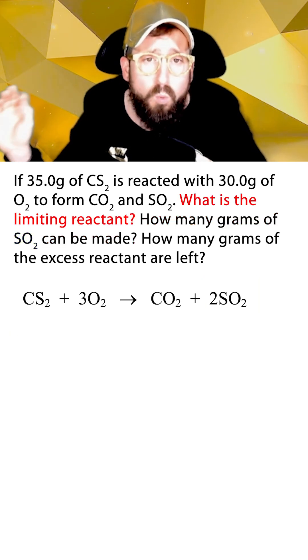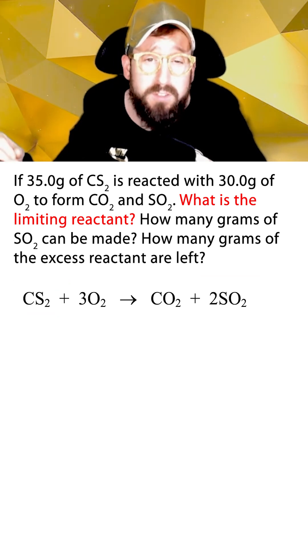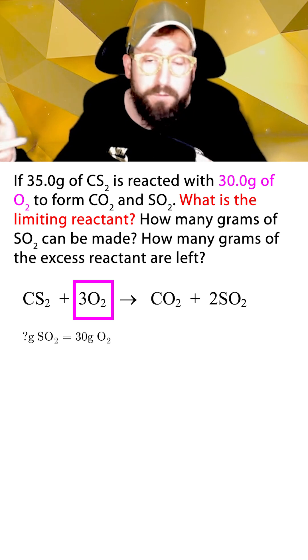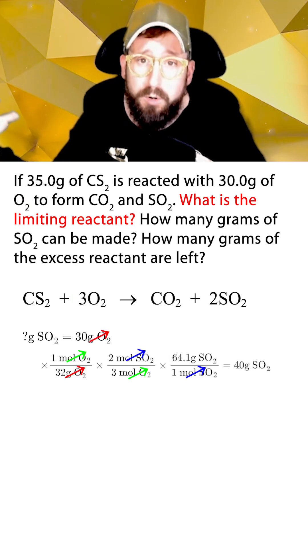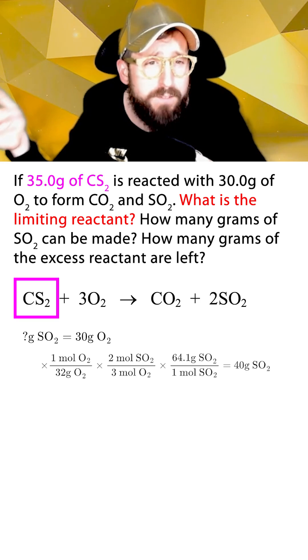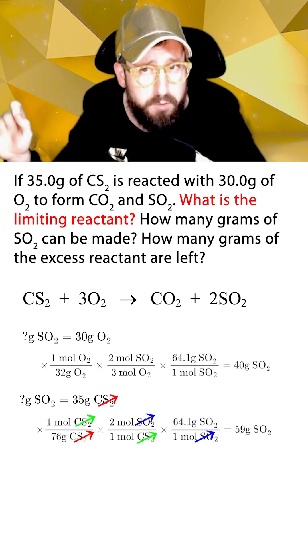So in this example, we're going to try and find the amount of SO2 that can be made from each of our starting reactants. Let's try using the 30 grams of O2 first, which if we remember how to use stoichiometry, would give us 40 grams of SO2 being produced. Now if we instead use the 35 grams of CS2 as our initial amount, this works out to give us 59 grams of SO2 produced.